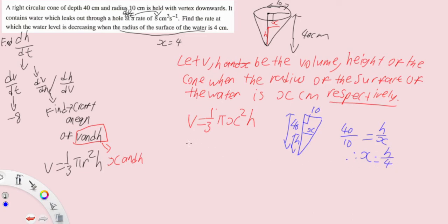Therefore we have 40 over 10 equals to h over x, therefore x equals to h over 4. So now we can express x in terms of h, we will then have 1 over 3 pi, h cubed over 16, x squared being h squared over 16, therefore we get pi h cubed over 48.